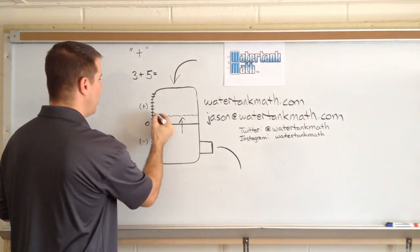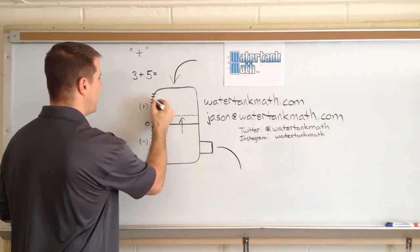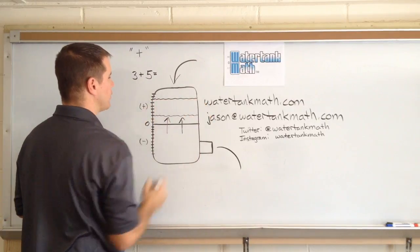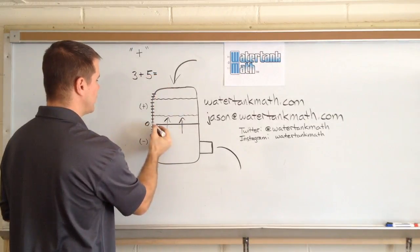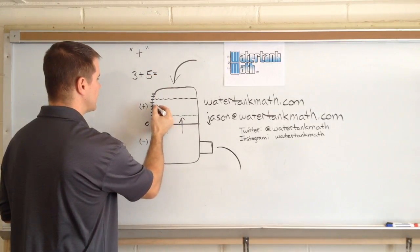It's going to rise 5 units. So 1, 2, 3, 4, 5 and it's going to be right there. So that is where my ending water level will be. So I can see that 3 plus 5 equals, and then 1, 2, 3, 4, 5, 6, 7, 8.